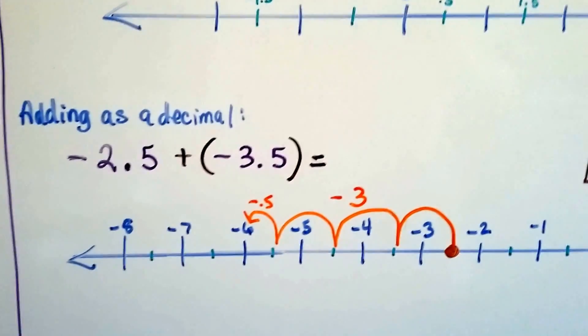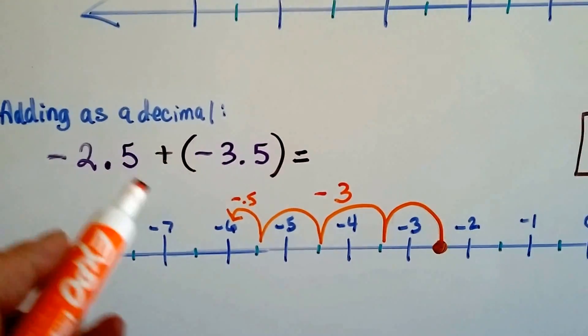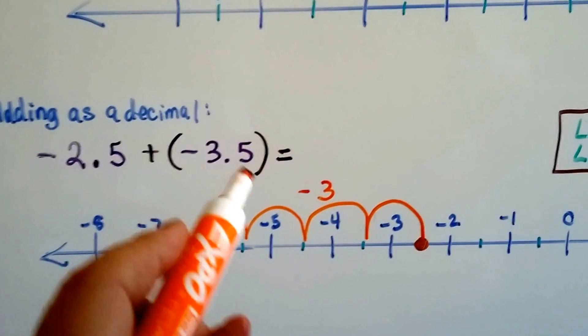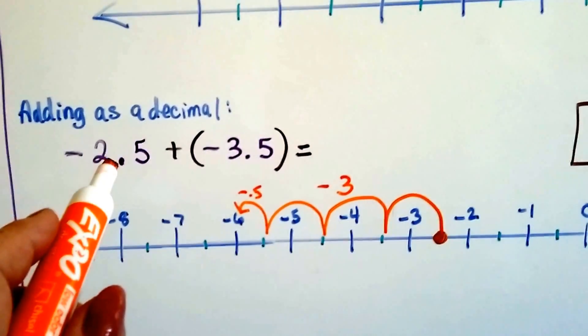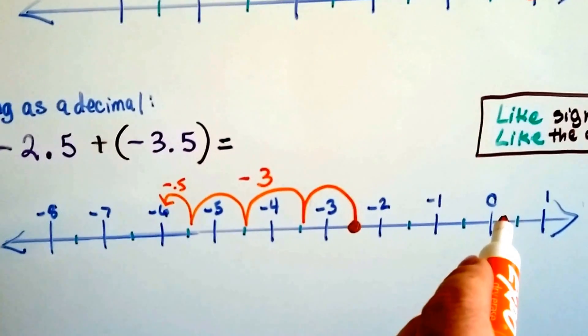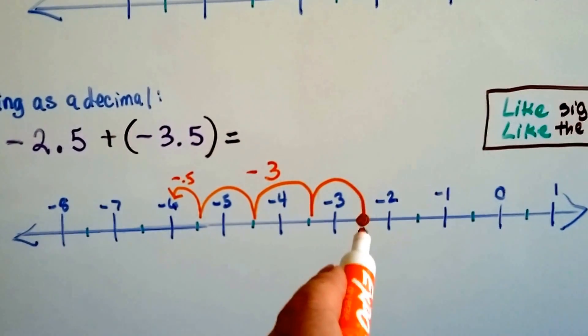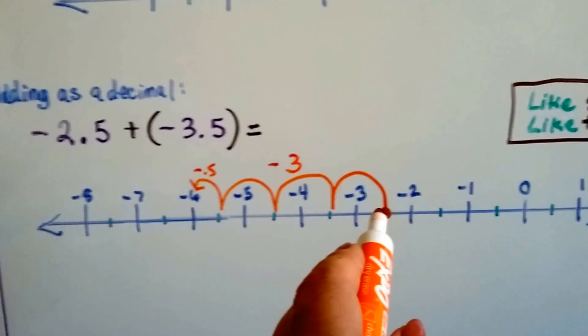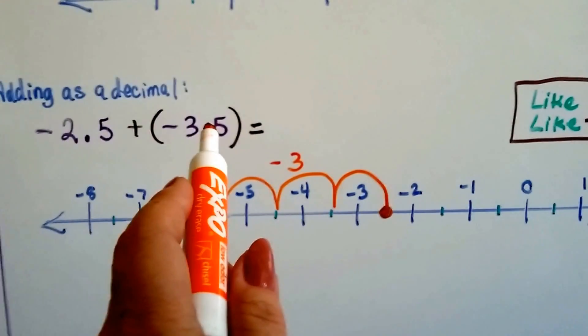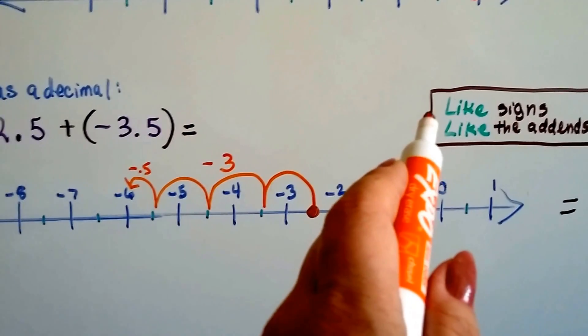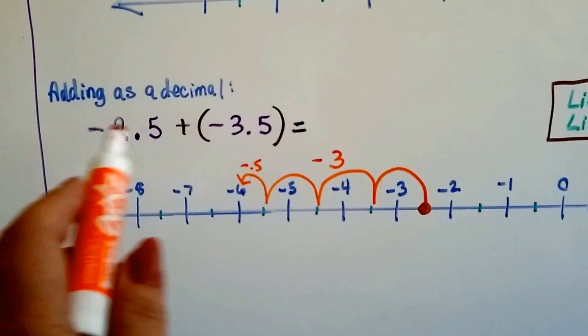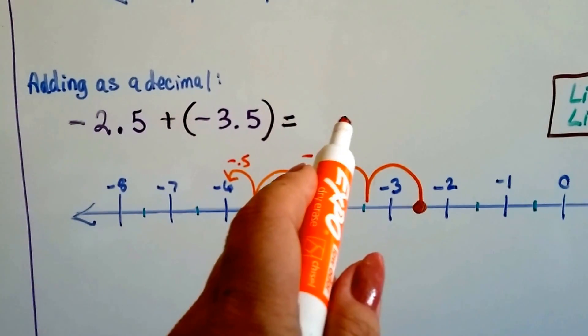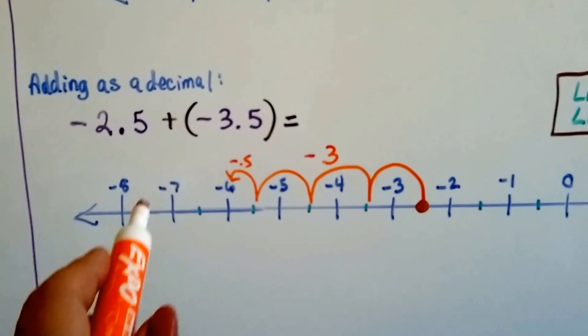If we add them as decimals, and we have a negative 2.5 plus a negative 3.5, we start at the negative 2.5 on the number line. Here's 0. So here's negative 2. Here's negative 2.5 right in between the 3 and the 2. And we're going to add a negative 3.5. Our rule is like signs, like the addends, so we know it's going to be a negative answer. So that means we need to go farther into the negatives.